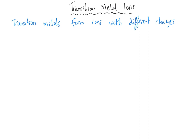Moving on to more specific properties of transition metals: when they form ions by giving away their outer shell electrons, they form positive ions. Transition metals can form positive ions with more than one charge depending on how many electrons they give away. The most common example you're likely to encounter is iron — iron can form Fe2+ or Fe3+, either giving away two electrons to become 2+ or three electrons to become 3+.